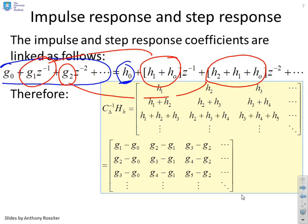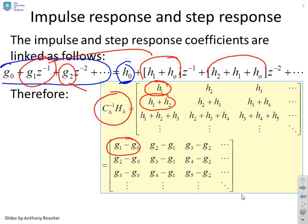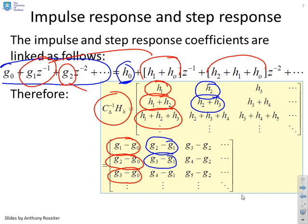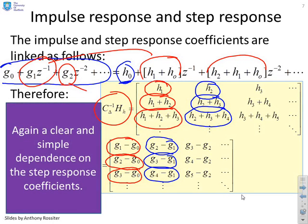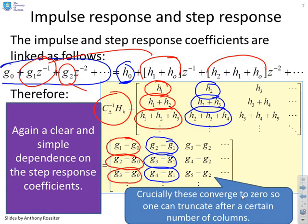So I can use that because now if I look at the matrix I've got, CΔ⁻¹HH, what you'll find is the coefficient h₁ is actually g₁ minus g₀. The coefficient h₁ plus h₂ is actually g₂ minus g₀. The coefficient h₁ plus h₂ plus h₃ is g₃ minus g₀. If I now look at the next column, h₂ is g₂ minus g₁. h₂ plus h₃ is g₃ minus g₁. h₂ plus h₃ plus h₄ is g₄ minus g₁ and so on. So clearly there's a pattern here. So what you notice is there's a clear and simple dependence on the step response coefficients, which is what we needed. And crucially, these all converge to zero so we can truncate after a given number of columns.